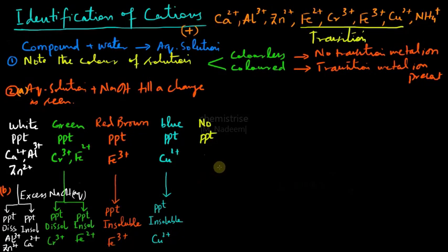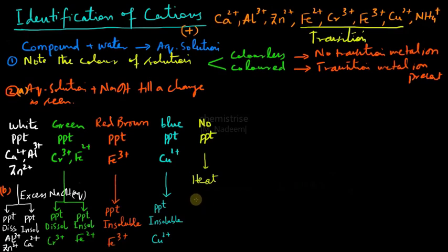When no precipitate is formed upon adding sodium hydroxide, we heat the solution. A colorless gas is produced. If a red litmus paper held in the test tube turns blue, the gas is ammonia, which shows the presence of ammonium ions (NH₄⁺).